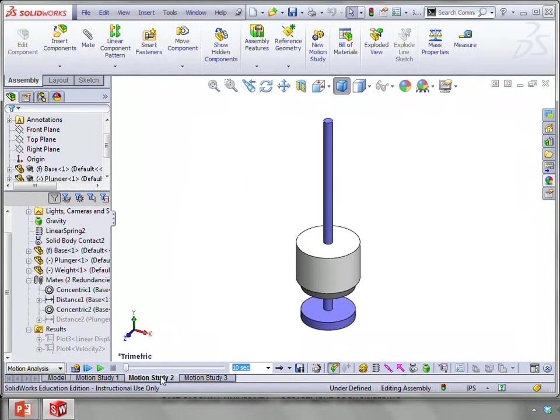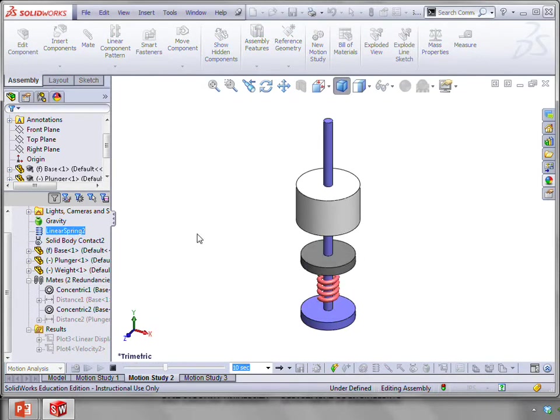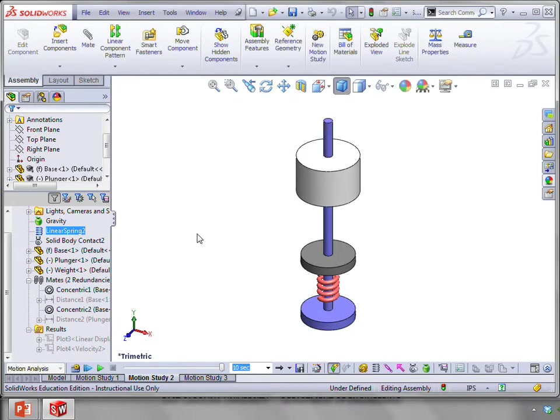So, here's the simulation. Again, we've started out with the spring compressed, so that the plates that are originally 6 inches apart are now 3 inches apart, so 3 inches of compression on the spring. And there you can see the weight being projected upwards, and then starting to fall back down again.